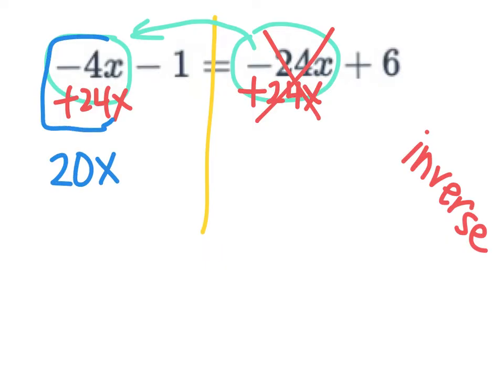Careful here, a negative 4 plus 24 is 20. So I have 20x on the left. And then I'm going to bring down the other terms.